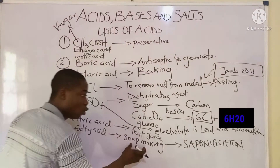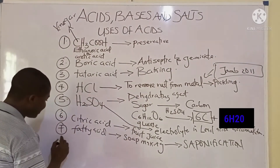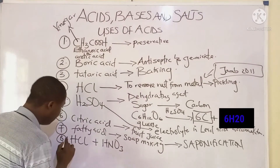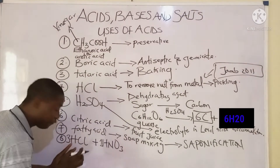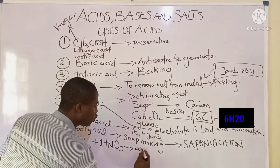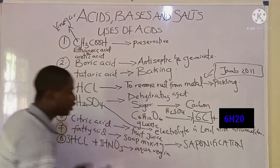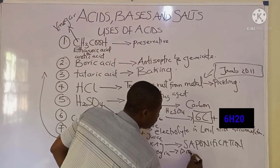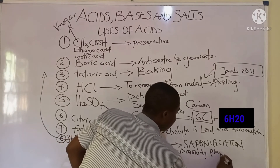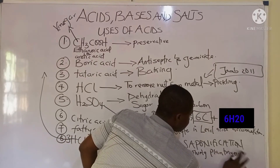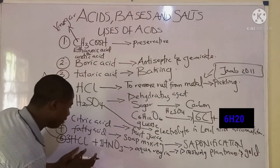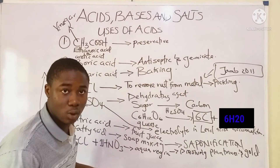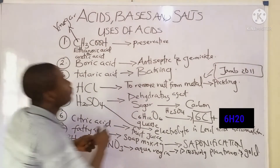When HCl is mixed with HNO₃ — three moles of HCl with one mole of HNO₃ — it forms a mixture called aqua regia. Aqua regia is used for dissolving platinum and gold. So three moles of HCl and one mole of HNO₃ make aqua regia, which dissolves platinum and gold.